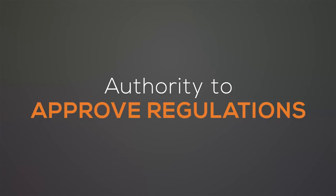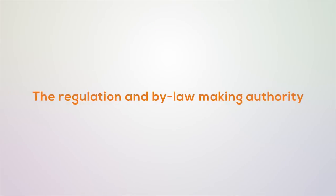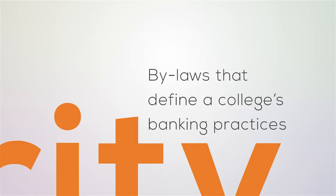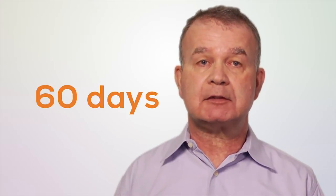The Code gives colleges the authority to approve regulations that must be passed by the government and bylaws that do not need government approval. The regulation and bylaw-making authority in the Code is broad and ranges from the authority to make prescriptive regulations defining things like professional misconduct, all the way to bylaws that define a college's banking practices. Every proposed regulation a college develops must be circulated to all members at least 60 days before it is approved by Council. Bylaws proposed under some of the bylaw-making authorities, generally those that relate to imposing obligations on members, have a similar requirement.